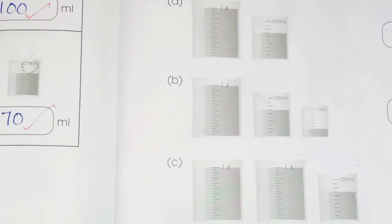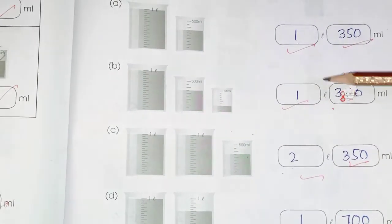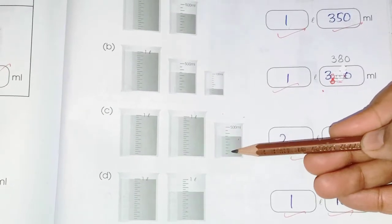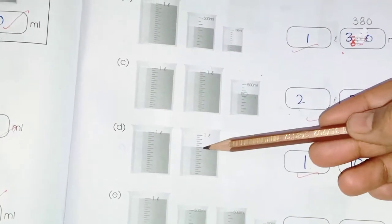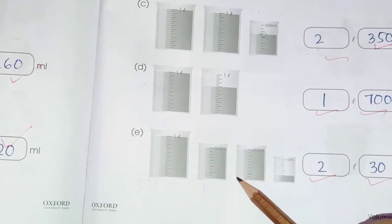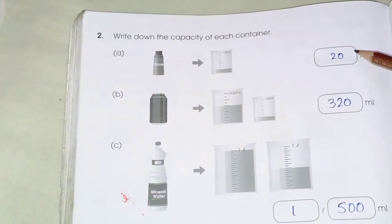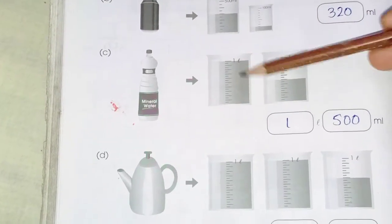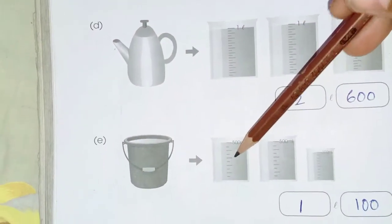For Worksheet 2, we have one liter and 350 milliliters. Then one liter plus 380 gives 1 liter 380. Here we have 2 complete liters, then one, two, three, and fifty gives 3 liter 50 milliliters. Next, one liter and 700 milliliters. Then one liter and 500 milliliters: 500 plus 500 is 1000 milliliters, which equals one liter, so that's 2 liters. The glue cup capacity is 20 milliliters and the can is 320.